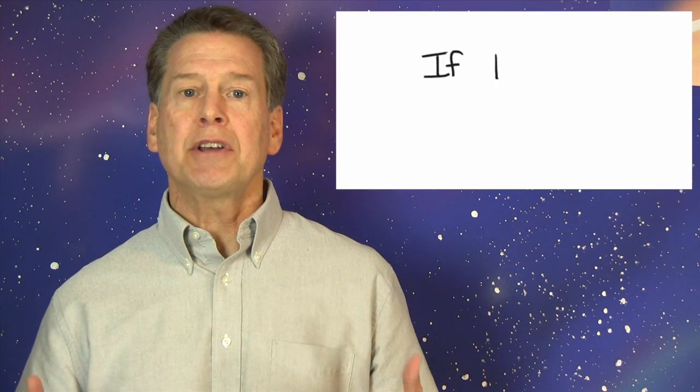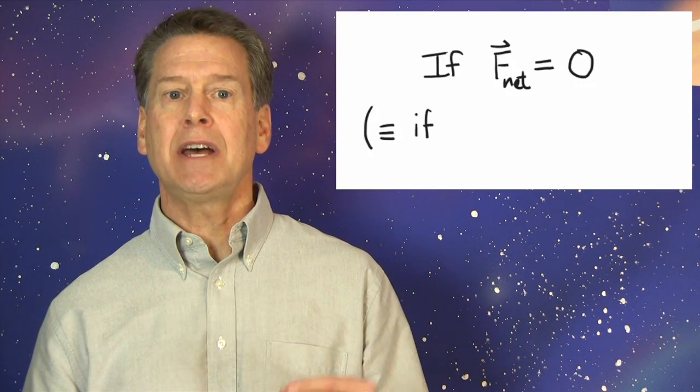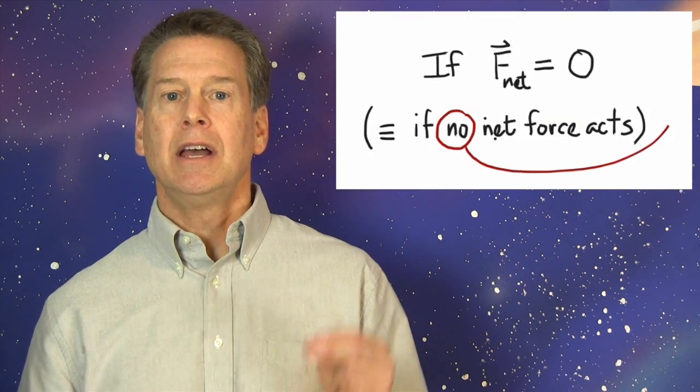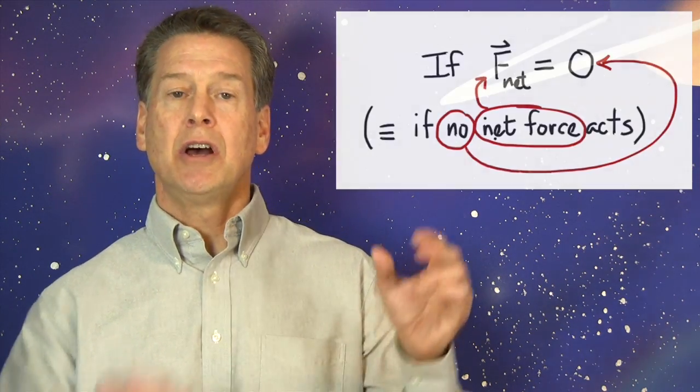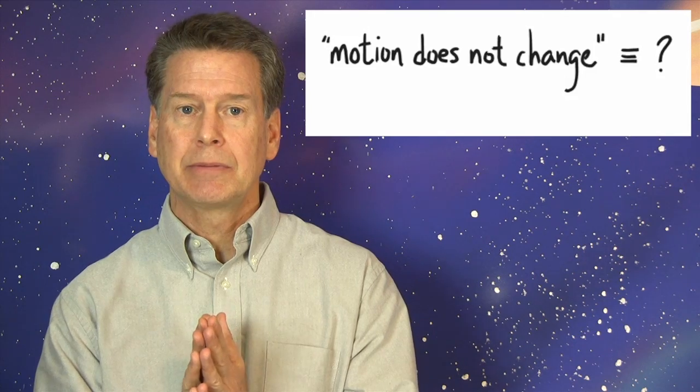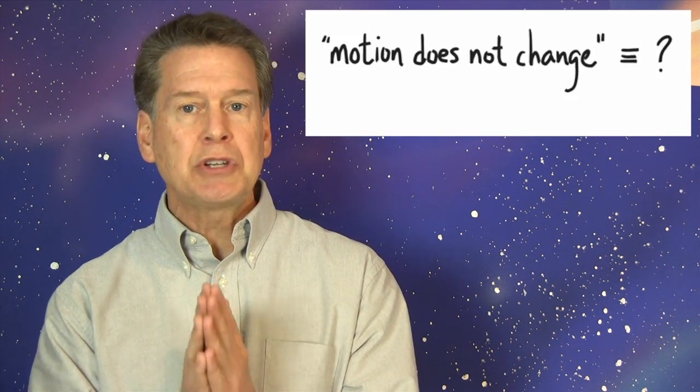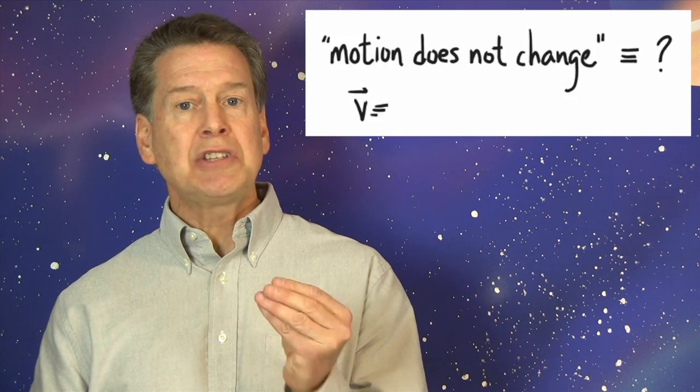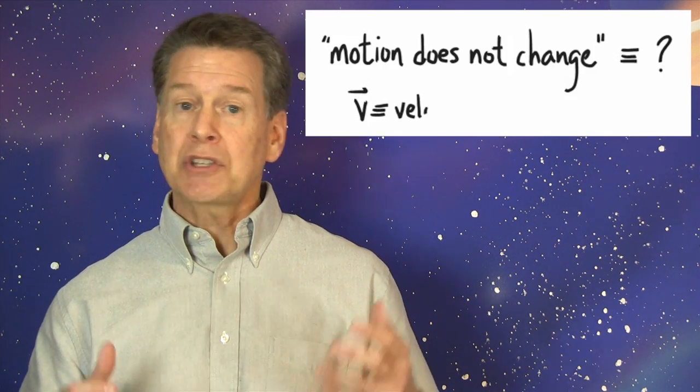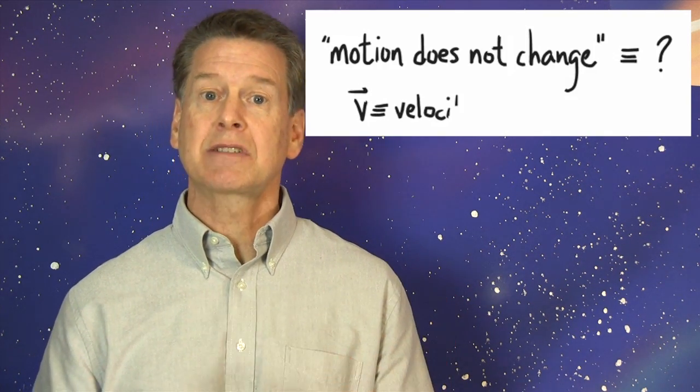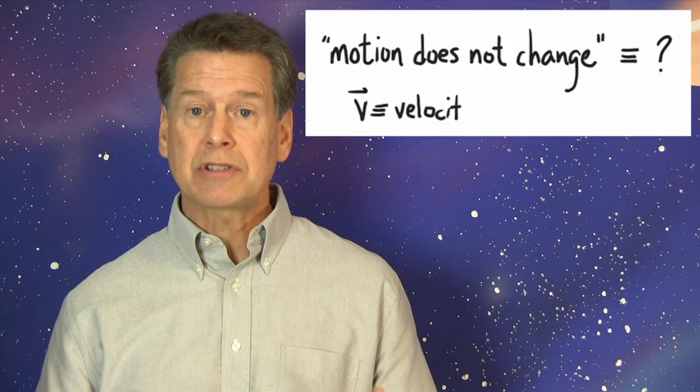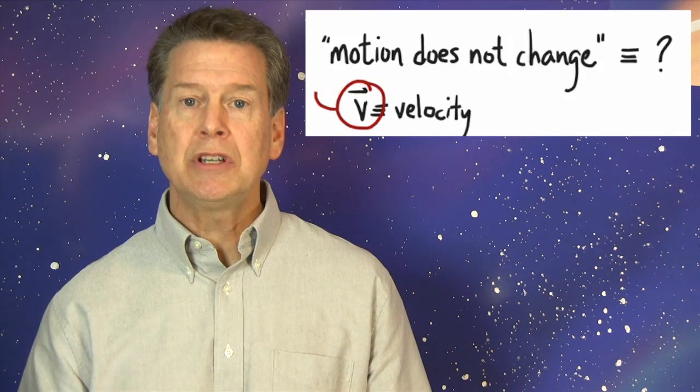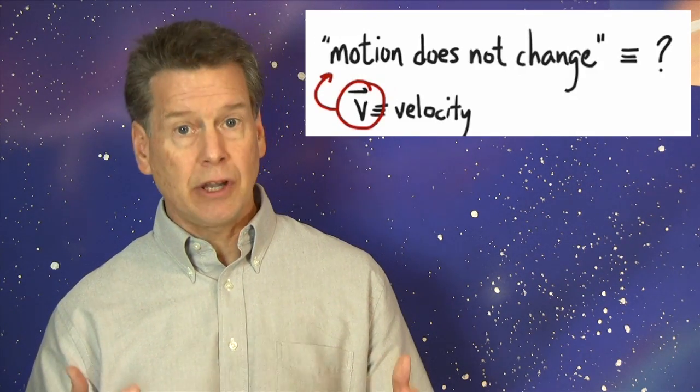So, the start of N1 says if F vector sub net equals zero, that is, if no net force acts on an object. Now, I just want to translate that motion does not change into symbols. The symbol for motion here is V vector, velocity. Velocity is just speed with direction. Direction matters for velocity just as it does for force. That is, like force, velocity is a vector quantity. So, the word motion is denoted by V vector, velocity.